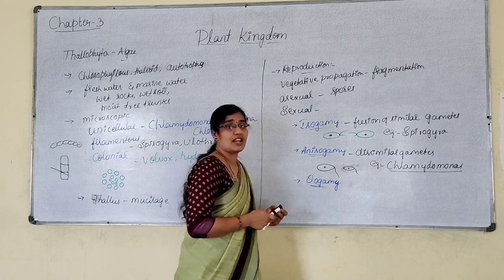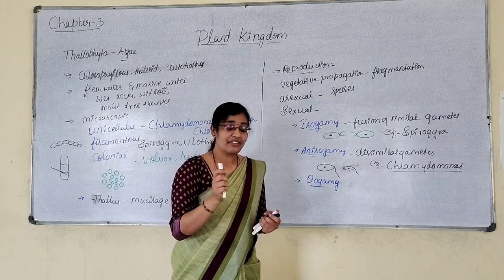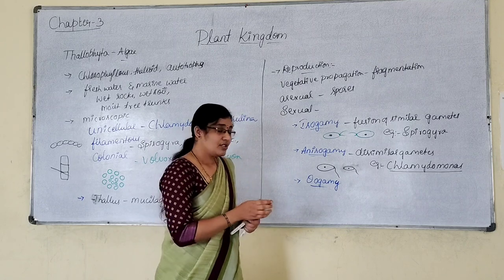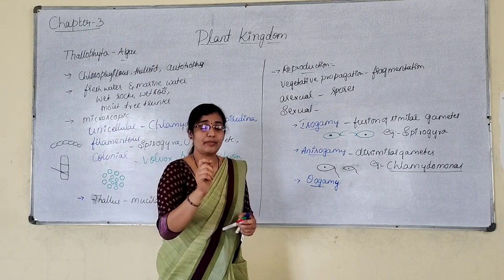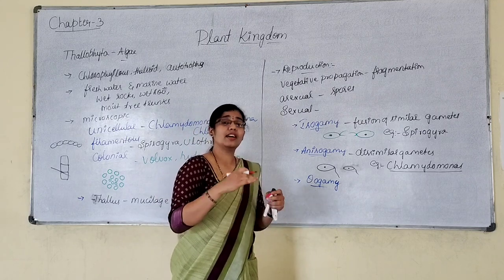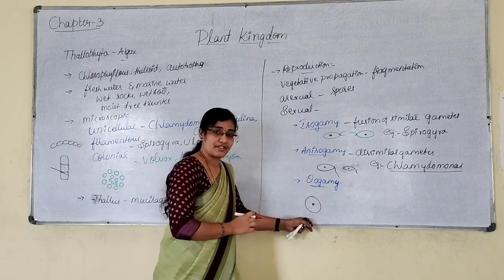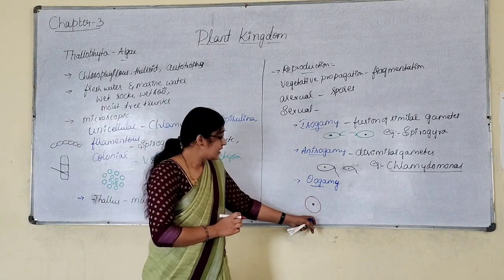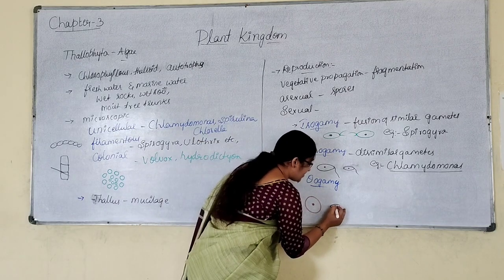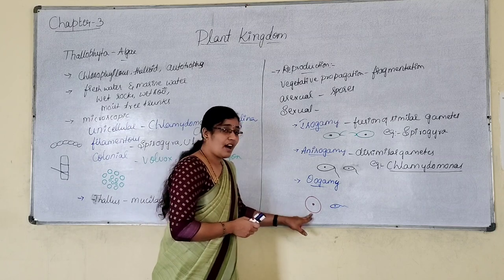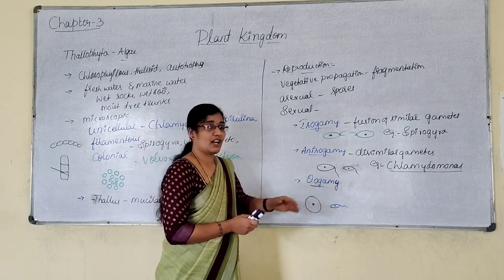Now let us move on to oogamy. In oogamy, the female gamete will be large and non-motile — meaning the female gamete will not have any flagella for movement. The male gamete will be small and motile, possessing flagella. When a large non-motile female gamete fuses with a small motile male gamete, that type of sexual reproduction is called oogamy.